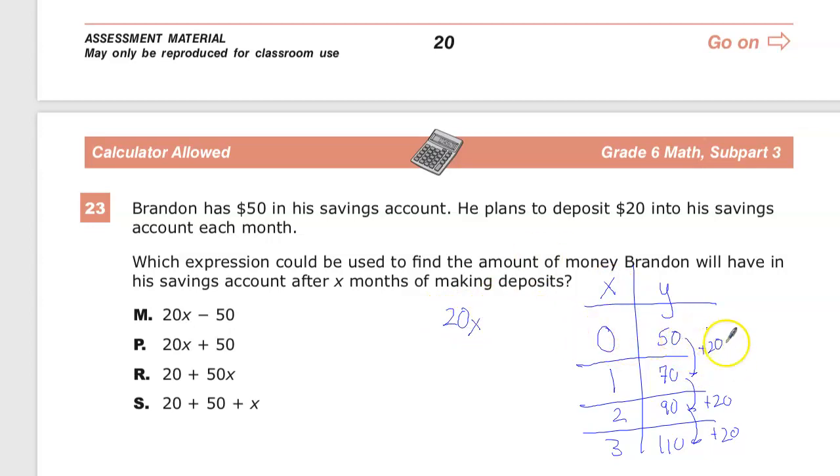And that checks out. You can see it starts at 50. If it's 20 times 1, 70. If he starts at 50, 20 times 2 is 40, and that would get you to 90. 20 times 3 is 60, and 60 plus 50 is 110. So that works. The problem is we can't just stop at 20x. We also need to think about, well, there's $50 sitting in there.